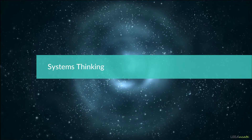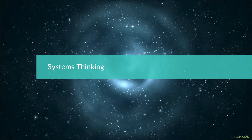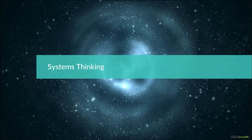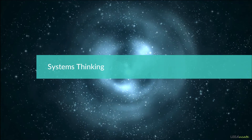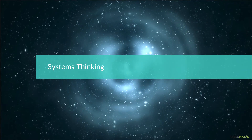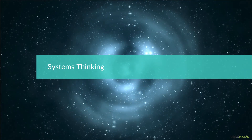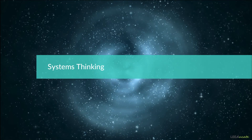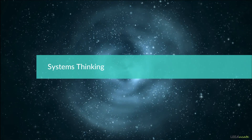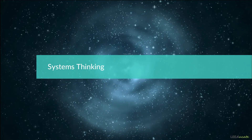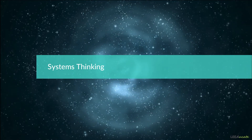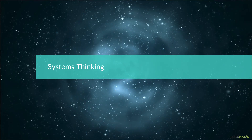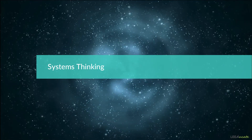The main idea behind systems thinking is to see that the systems in the building do not work in isolation. There is not a single system in our universe that works in isolation. Everything is interconnected. In order to effectively understand systems thinking, we need to understand the types of systems.